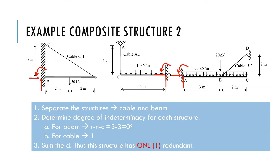These composite structures demonstrate similar cases where the beam is fixed at one end and connected to a cable. Similarly to example 1, we separate the beam and cable and determine the d separately. Here, d for beam is 0 and for cable is 1. Therefore, these structures have only one redundant.